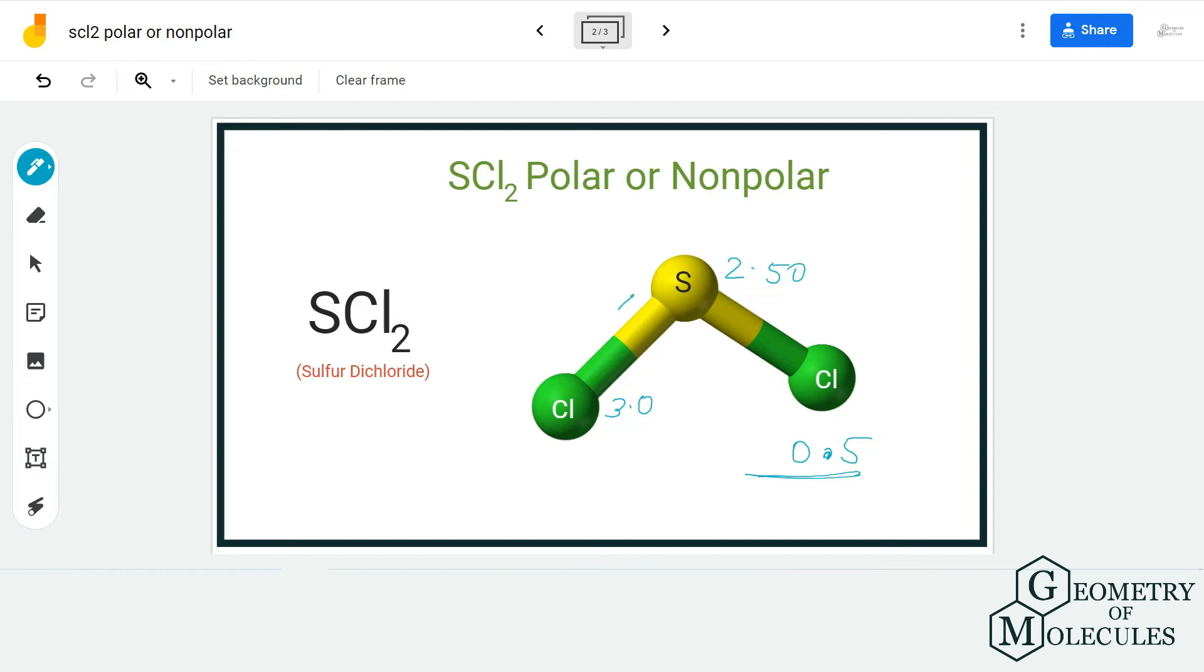As these bonds are polar, the dipole moments will not be cancelled out by each other because of the bent shape. There is a dipole moment between sulfur and chlorine atom which is in the direction of chlorine atom from the sulfur atom, and this will be present on both sides of the molecule.